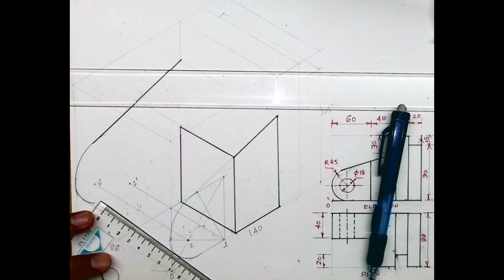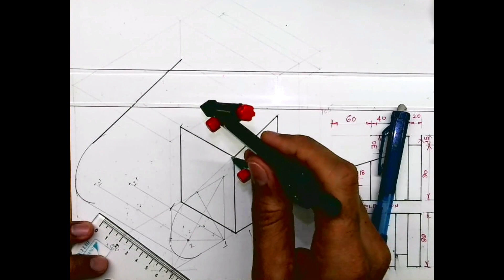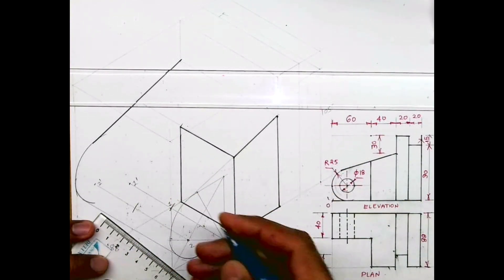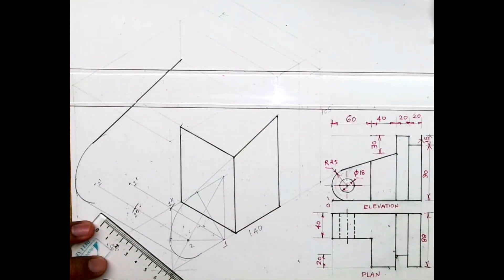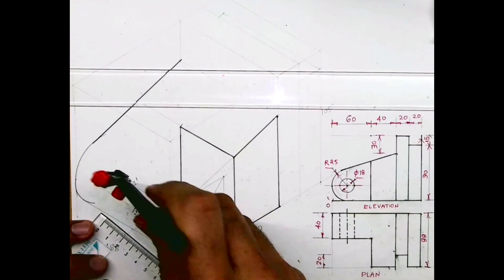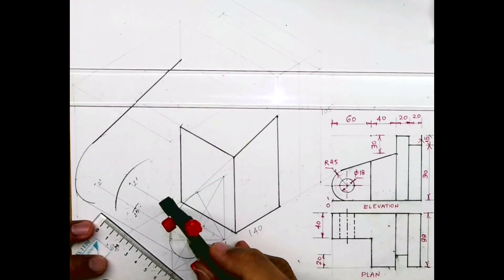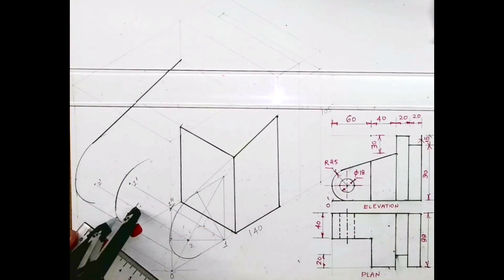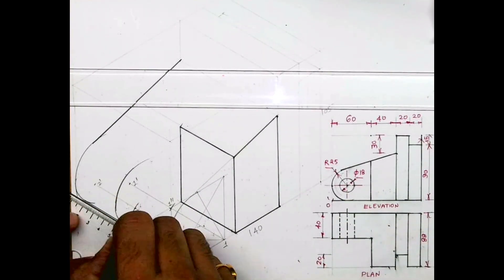You draw curves — this is 48. I'll take from one, 48 behind, and from two, 48 behind. So that will be one double dash and two double dash. Now I'll take this radius. From one double dash I will draw an arc, from two I will take, and from two double dash I will draw r. Tangent.